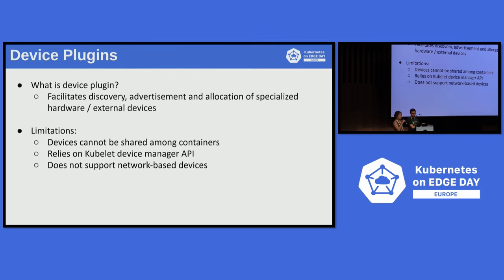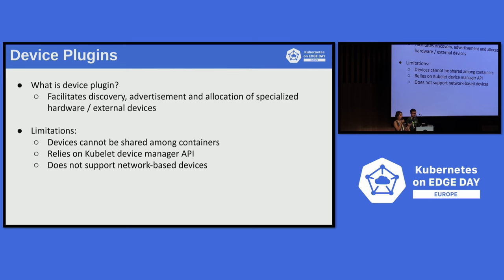In Kubernetes, we actually have the device plugin system. The device plugin system facilitates the discovery, advertisement, and allocation of specialized hardware and external devices. This might include GPU, FPGA, high-performance NICs, et cetera. But there are a few limitations with the device plugin system today. For example, there is no real resource sharing, so devices can't be shared among containers. It also relies on a very specific device manager API, so you have to constantly track the versioning and compatibility. And it's also limited to hardware that are on nodes, so it doesn't really support network-based devices.